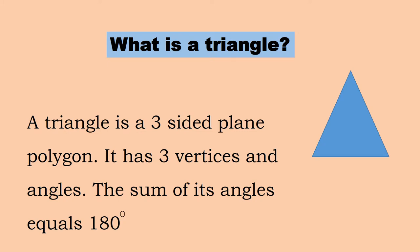A triangle is a three-sided plane polygon. It has three vertices and three angles. The sum of all its angles equals 180 degrees.